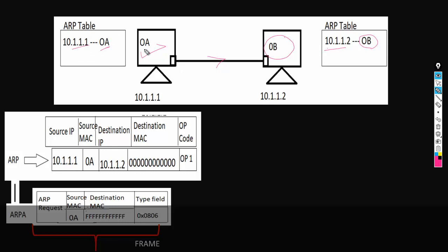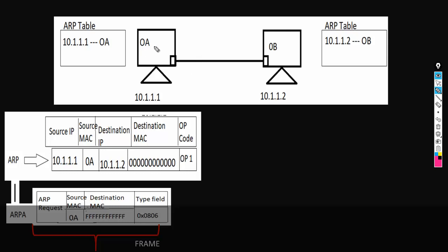At every interface, an ARP table is maintained, and the ARP table has information of its own IP and MAC address. Both Machine A and Machine B will maintain their ARP table. In Windows operating system, the machine will not have information of its own IP and MAC address, but in case of Cisco devices it will have that information.